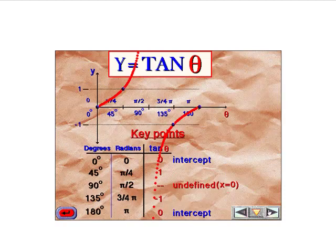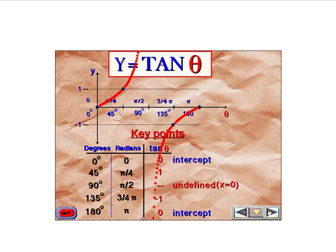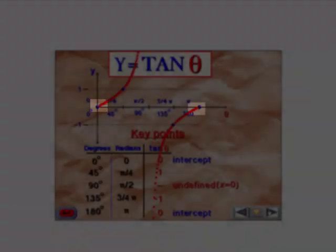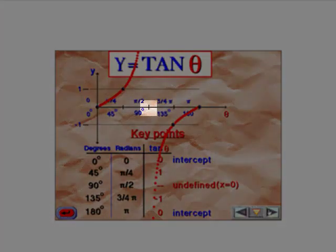If we look at tangent from 0 to 180 degrees, we see it crosses 0 at 0 degrees and at 180 degrees, or pi, and it's undefined at 90 degrees.